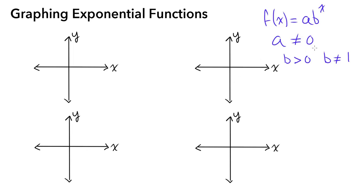The reason a can't equal zero is because we're multiplying here. So if one of our numbers is zero, then the answer is always going to be zero. The reason b can't be one is because one to any power is always one, and any number times one equals itself. So you would always end up with the same output, no matter what the input is.